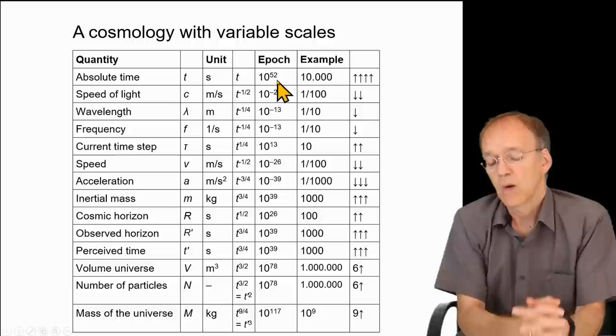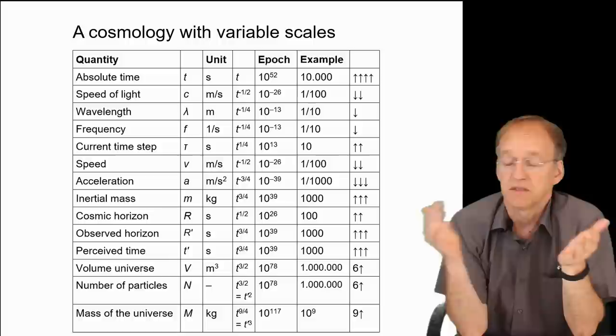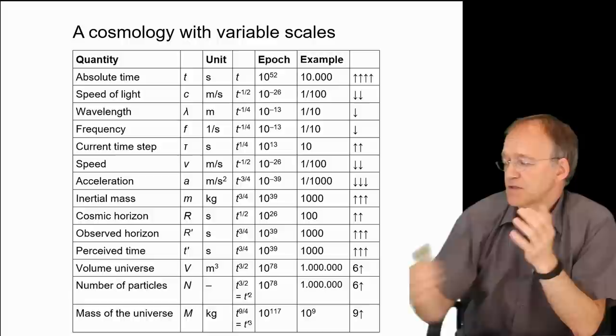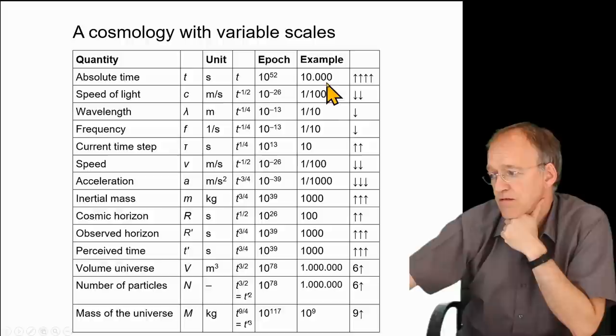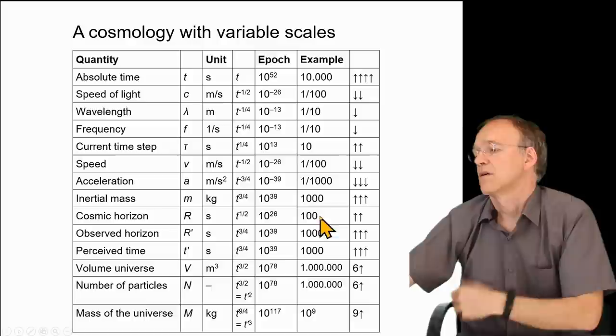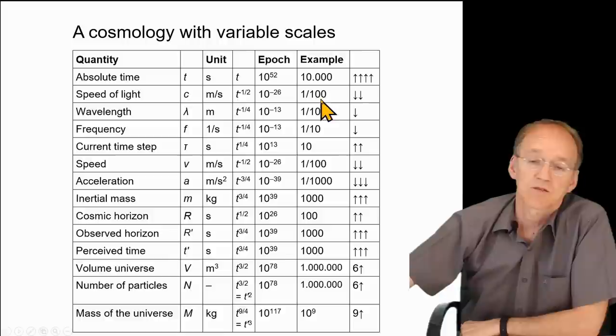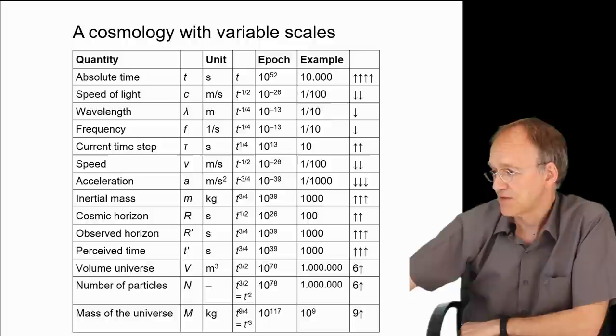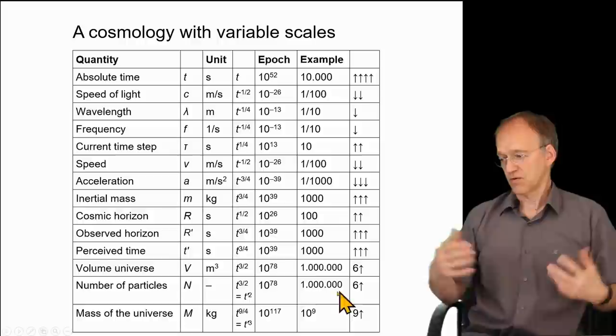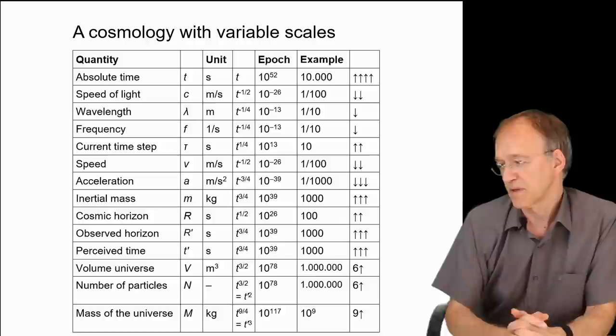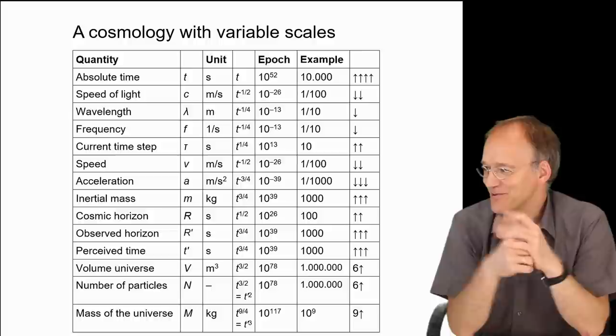Epoch 1, t equals 1, would be when the universe has just the size of an elementary particle, a neutron maybe. If you consider, for example, epoch 10,000, the size of the universe's cosmic horizon would be 100-fold of the original size. At the same time, the speed of light has decreased to 1/100 of its original value; the wavelength and frequency have decreased, the time step has decreased, and so on. Then what you observe is a volume of one million times and a million times of the original particles.